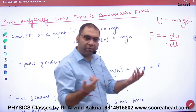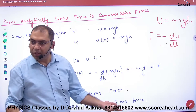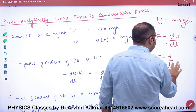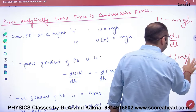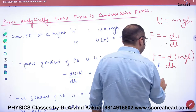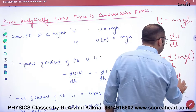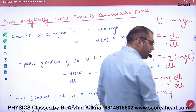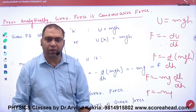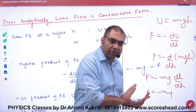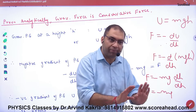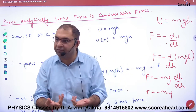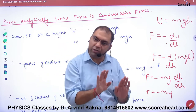We have done this. When I apply this formula: minus d by dh of U, which is MGH — so it becomes minus MGH times dh by dh, which is 1. The answer is minus MGH. This force is gravity. And since this formula holds, the force is conservative. So, proved — gravity is conservative.